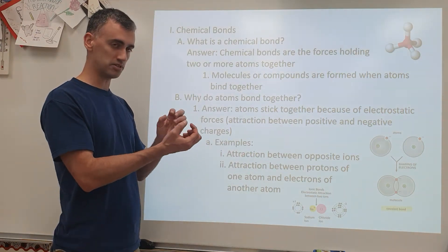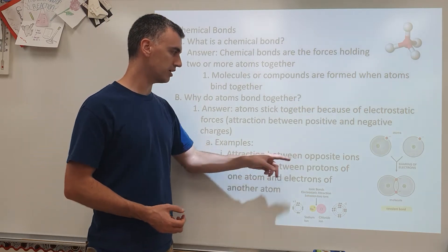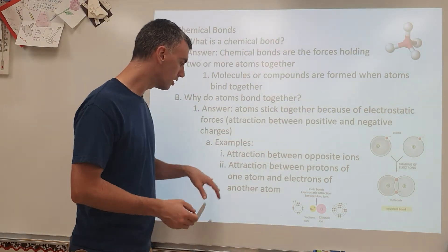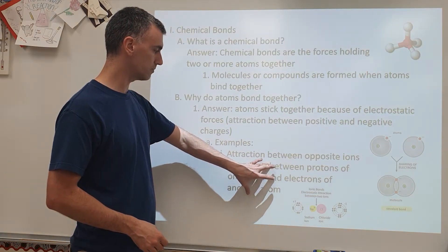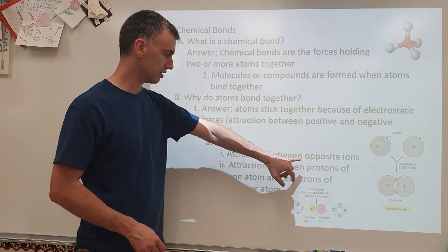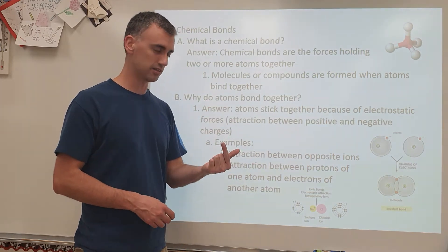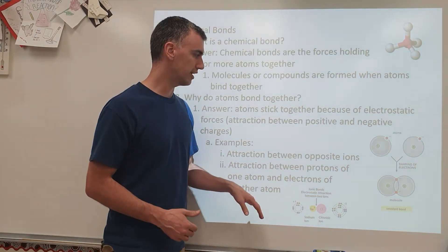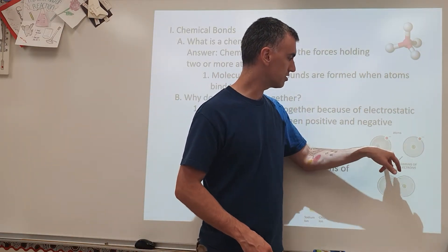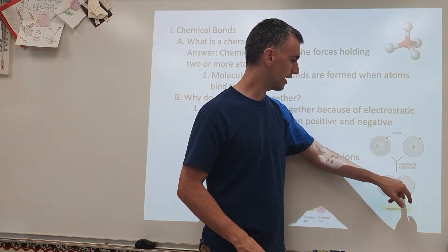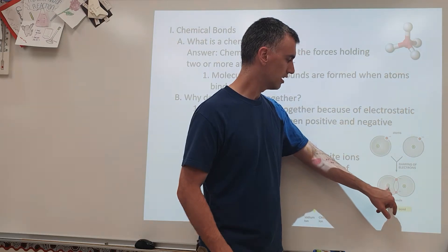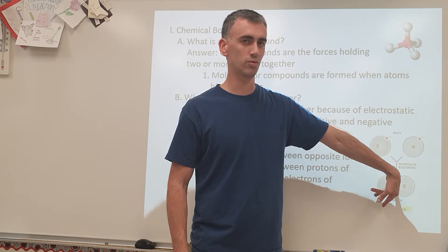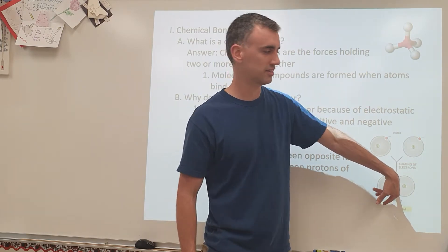You can either have fully oppositely charged ions that make what's called an ionic bond, because a positive ion will attract to a negative ion and stick together. Or you can have something called a covalent bond, where the protons of one atom — that's positive — are attracted to the electrons of another atom — those are negative. If two atoms are sharing their electrons, it's kind of like two toddlers both grabbing onto the same toy, and if they both won't let go, they're stuck together.